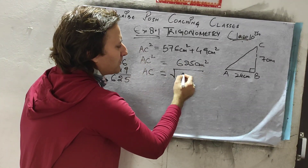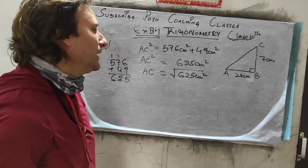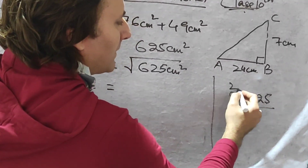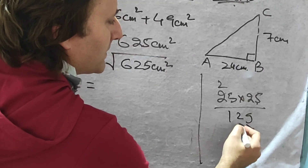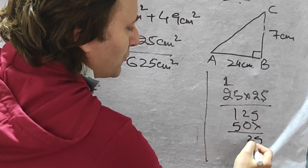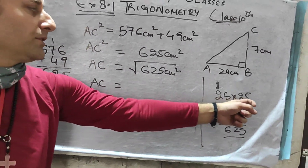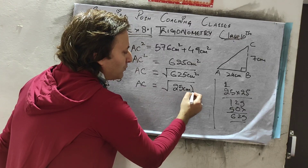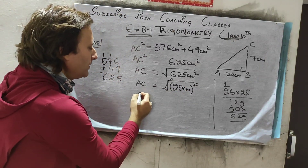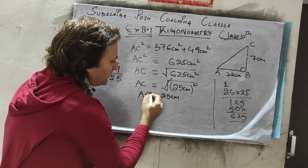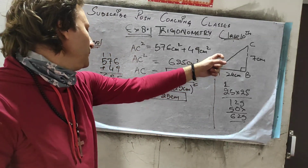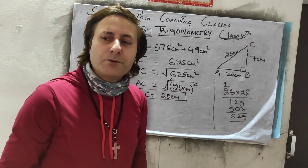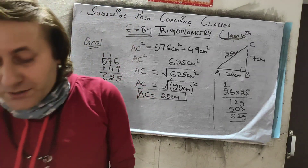Now we take the square root of both sides. Since 25 × 25 = 625, the square and root cancel each other, so AC = 25 cm. We have found the hypotenuse, which is 25 cm. But this was not the actual question — our question asks for something different.